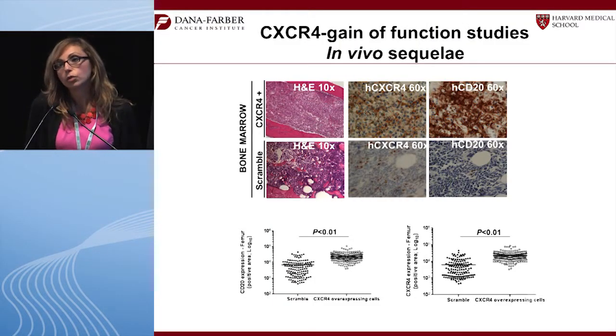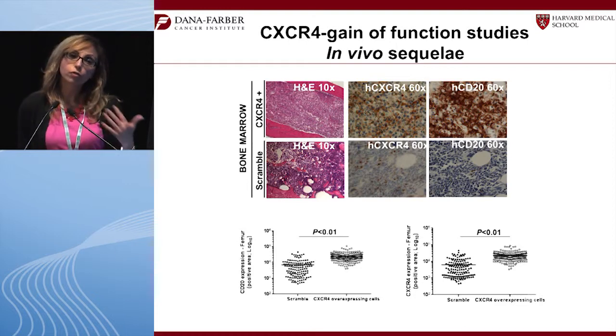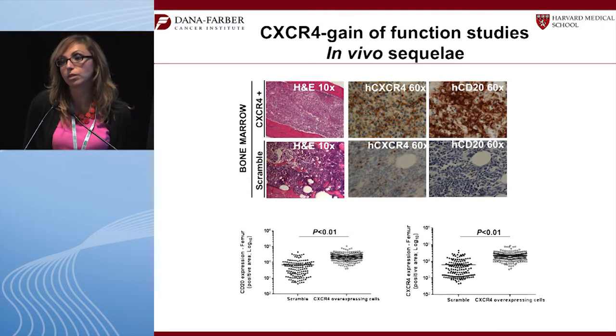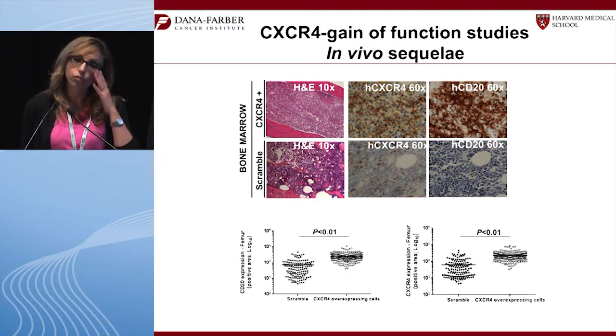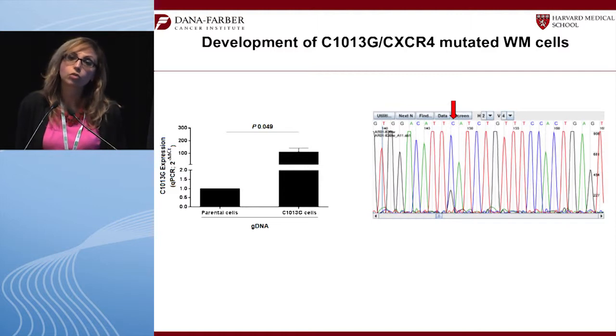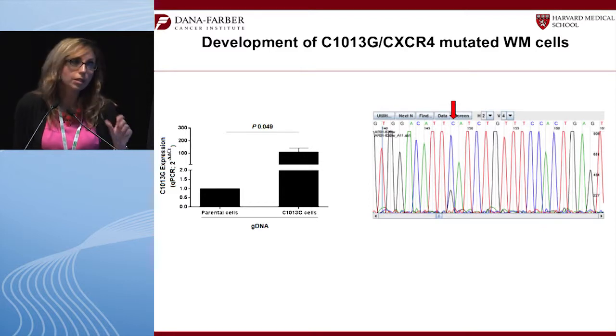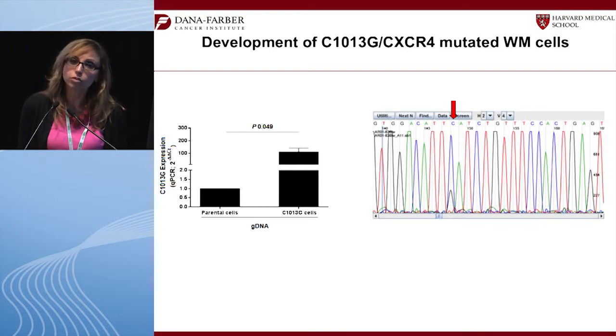We then conducted in vivo mouse studies to determine whether this is a functional mutation. First, we overexpressed CXCR4 to model gain of function — cells with higher CXCR4 levels showed much faster dissemination, growing more aggressively in bone marrow, liver, and spleen, as confirmed by immunohistochemistry. We then directly introduced the C1013G mutation into Waldenström cells, confirmed by PCR and sequencing.